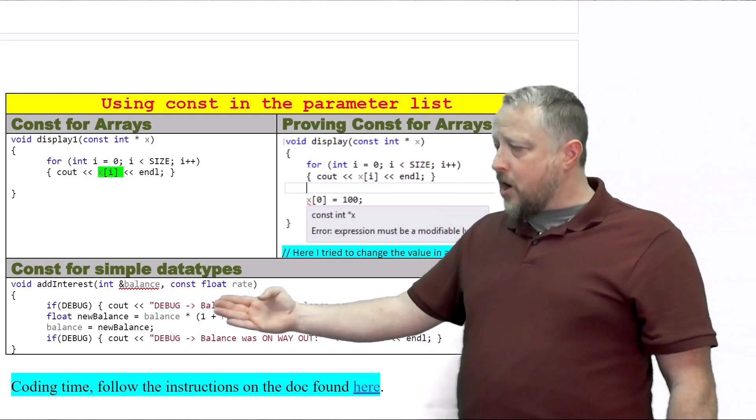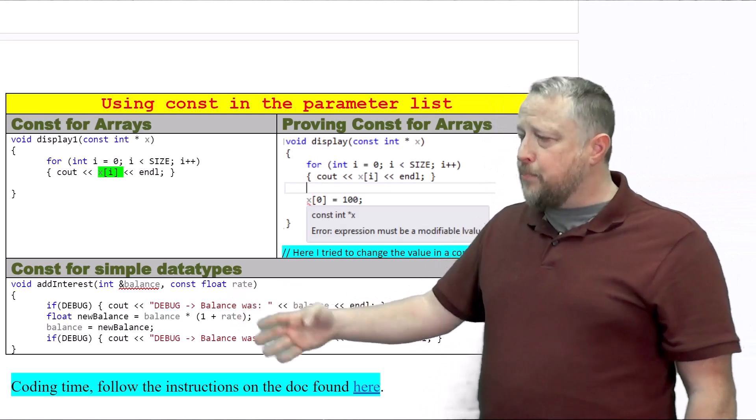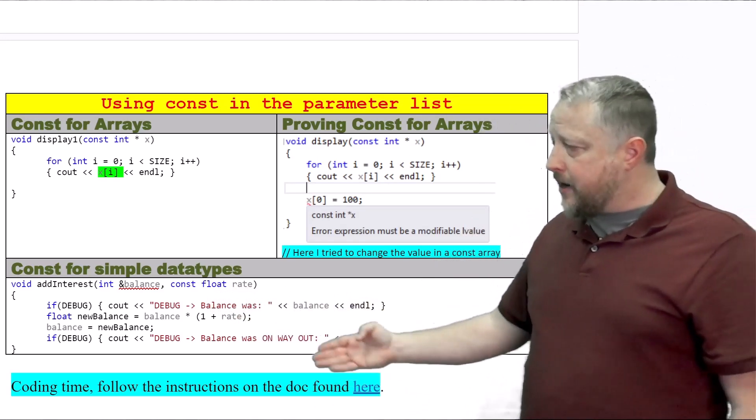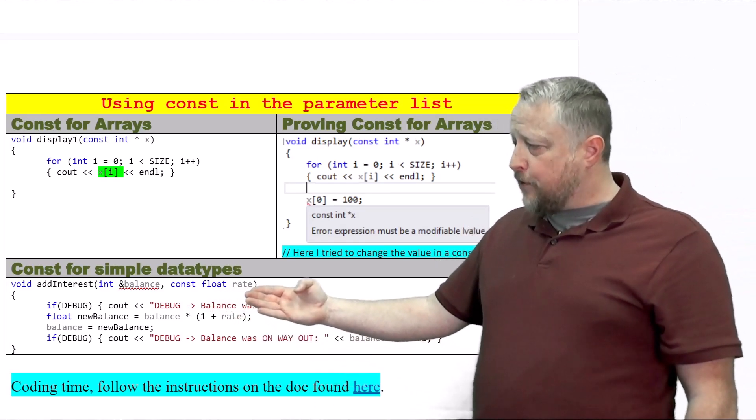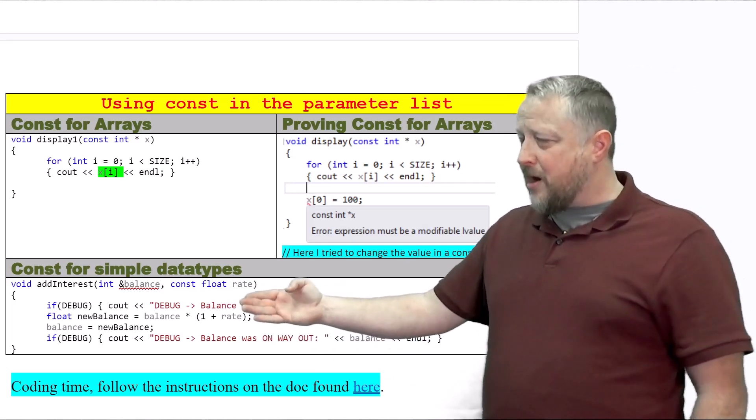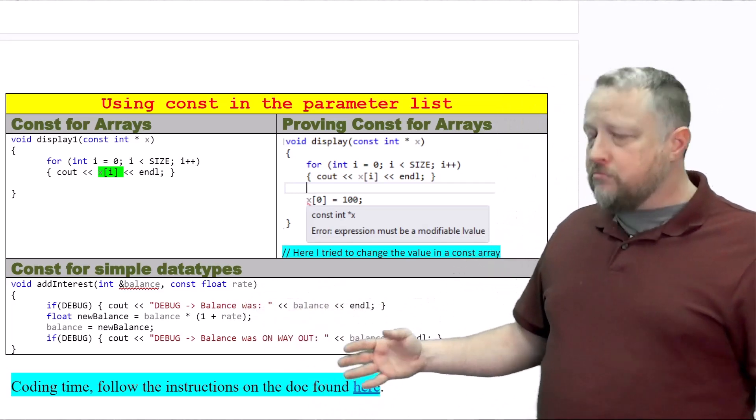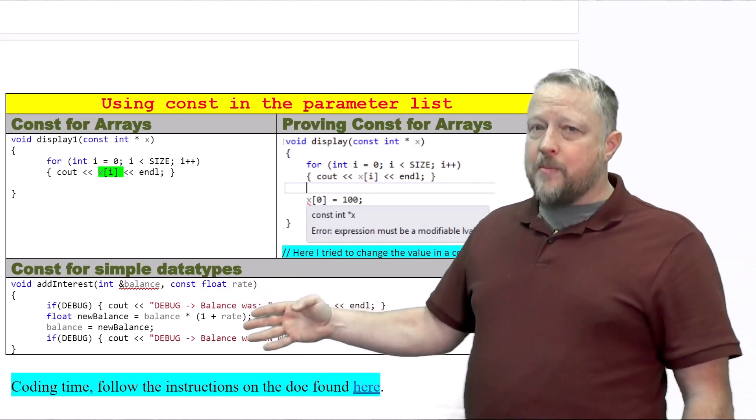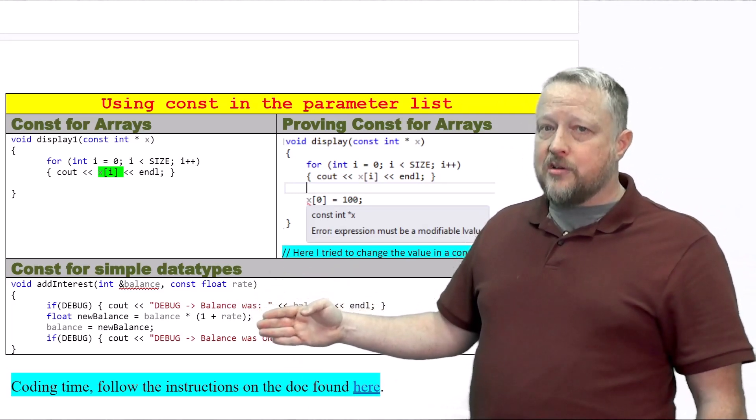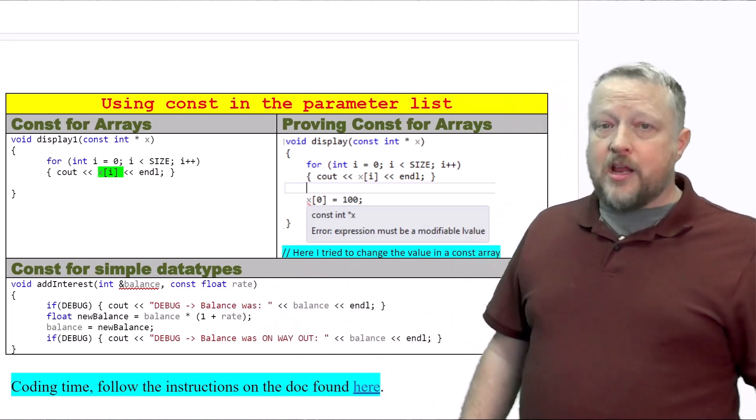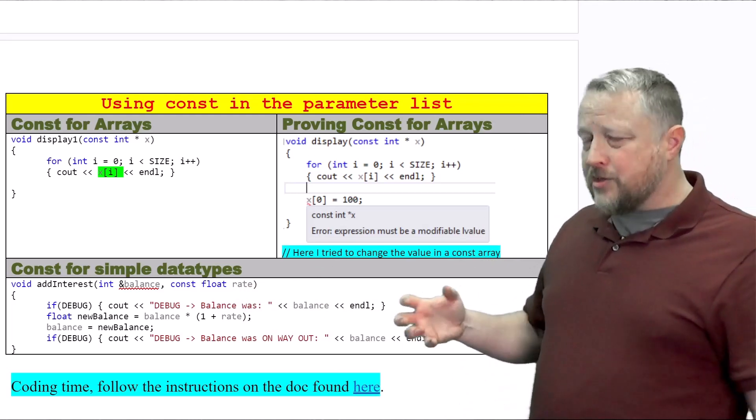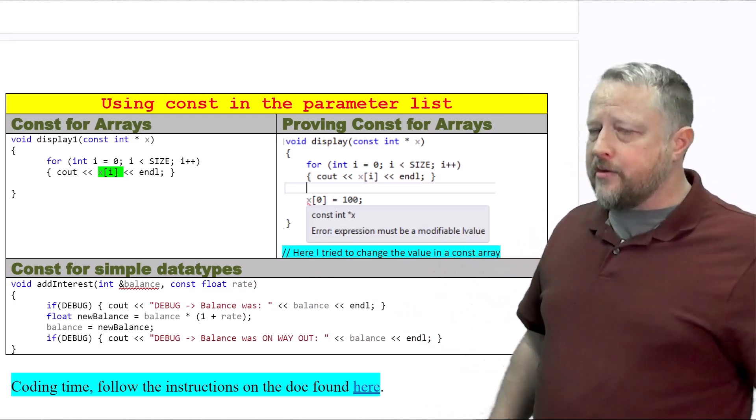And just to remind you, you can use constant on simple data types as well. Now, again, would they be given a copy of a float rate to the function? Yeah. But let's say you really wanted to make sure that they know they can't change it, then you can put the const in front of it, and that'll work out just fine. So that const is a really nice security blanket on everything.